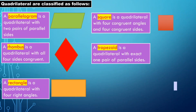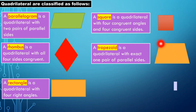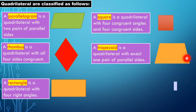Next, we have a trapezoid. A trapezoid is a quadrilateral with exactly one pair of parallel sides. As shown in the illustration, the parallel sides are in the upper and lower parts, while the other two sides are non-parallel. When the non-parallel sides are congruent in measure, we call that an isosceles trapezoid.